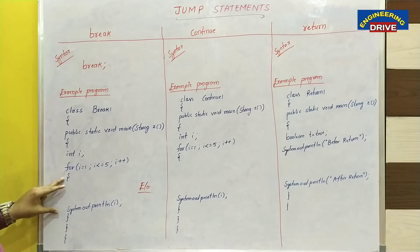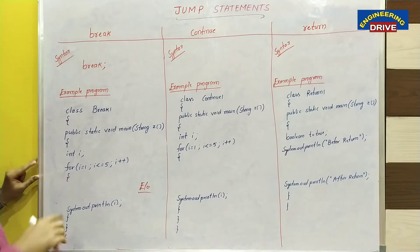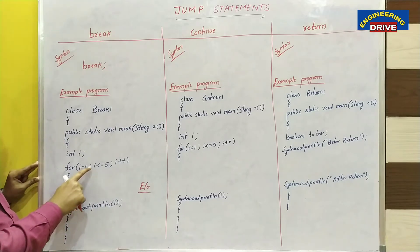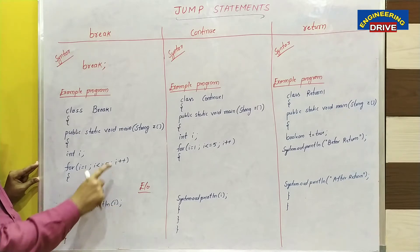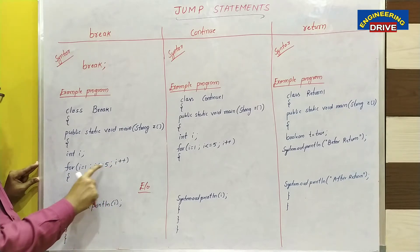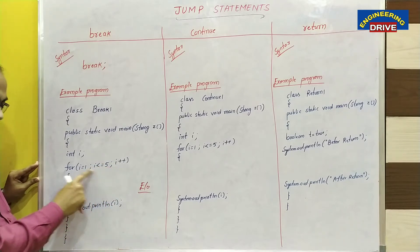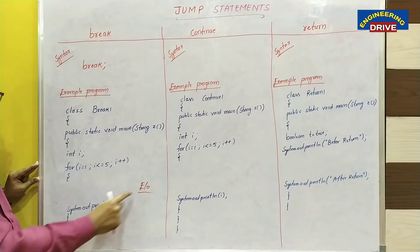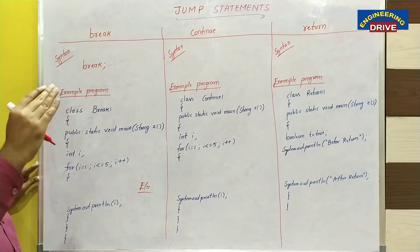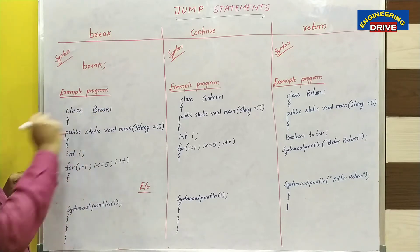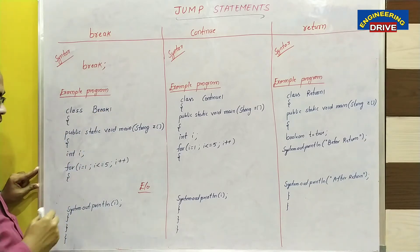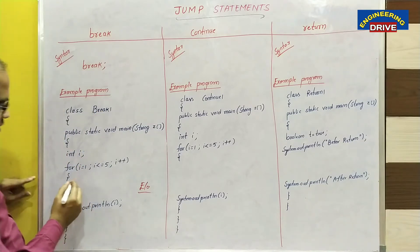That program is written here. It will display 1 to 5 numbers, and for the sixth number the condition will become false, so control will come out of the for loop and we get only 1, 2, 3, 4, 5. Now, in this program I can make use of the break keyword. Let us see how.